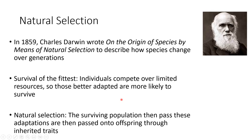When survival of the fittest repeats over and over throughout generations, it's consistently the most fit that survive. That most fit organism is then able to pass its traits down to the next generation. That's where natural selection occurs — generation after generation. Natural selection is just the passing on of traits from the organism that survives — the most fit one.